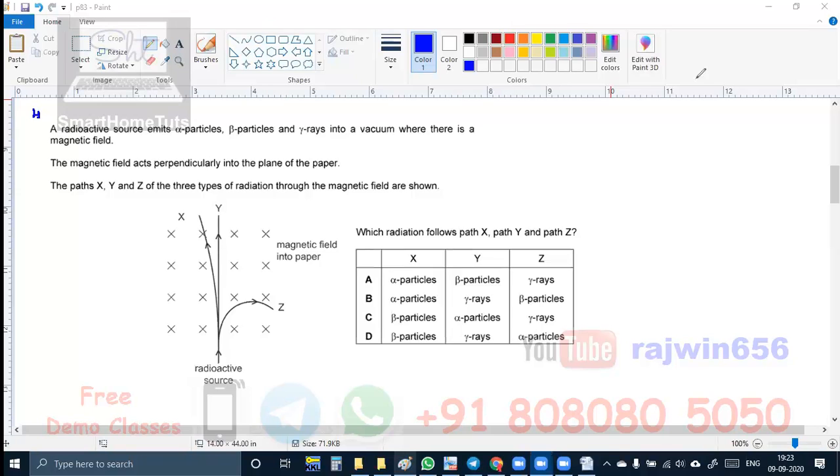This is question number four. There is a radioactive source, the magnetic field is into the paper, the deviation of different particles is shown, obviously Y is going straight. So this has to be gamma rays. Now we have to choose for X and Z between alpha and beta. Now see over here, the deviation is very little.